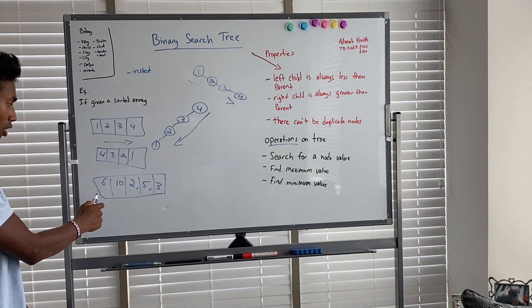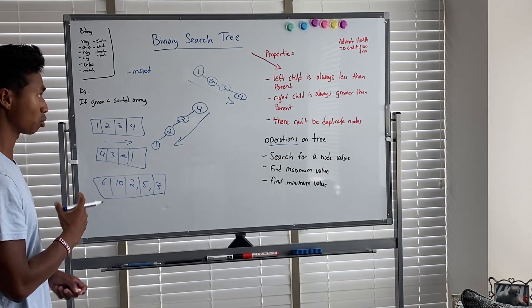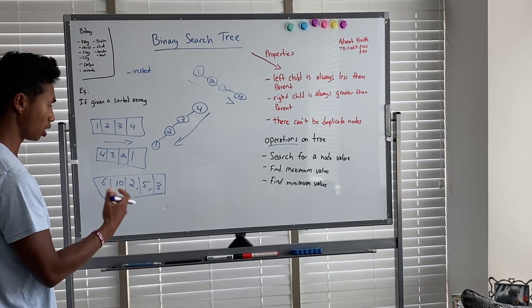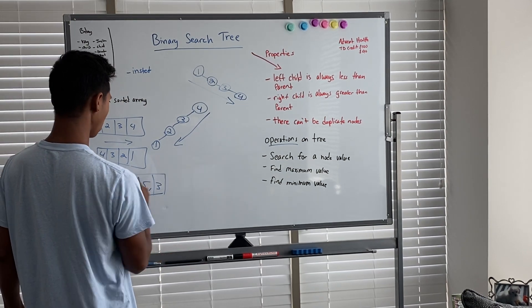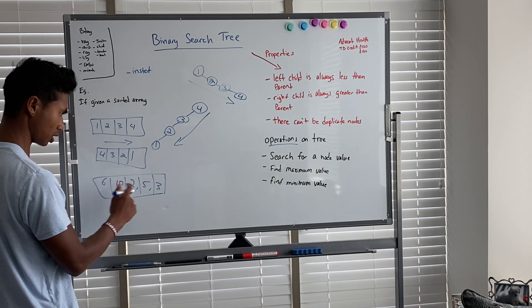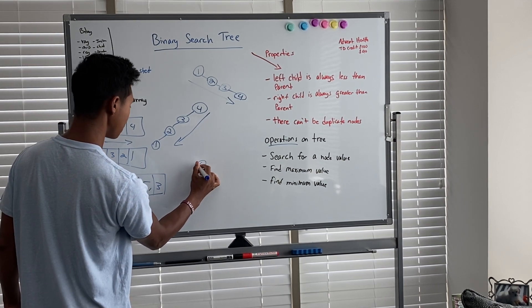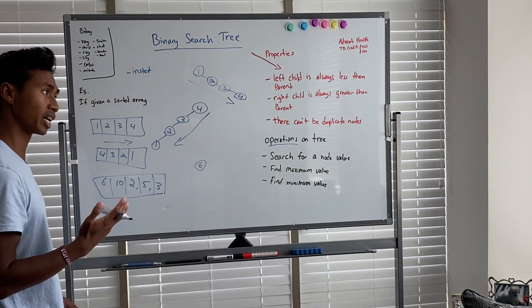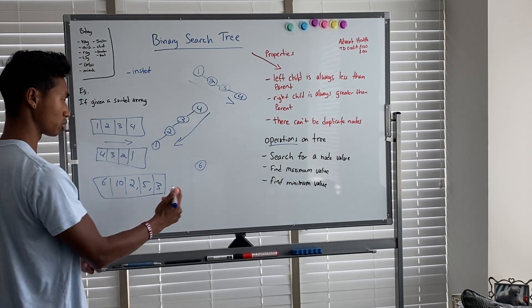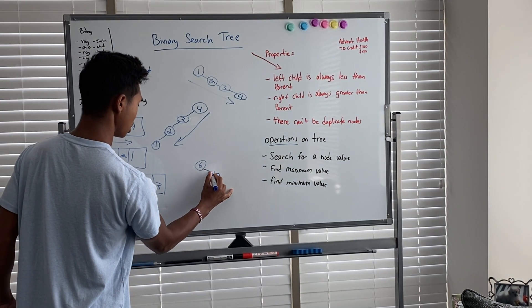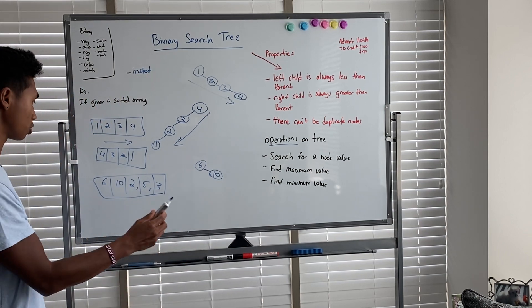But let's look at the third one because the third one is interesting. The third one is a mix of unordered elements. So the first element is going to be six as our root node. And now ten. Ten is greater than six, so it's going to go on the right-hand side as our right subtree.